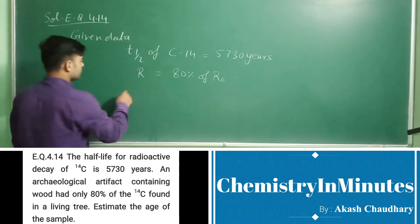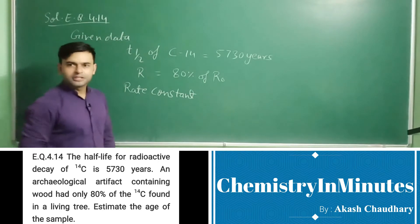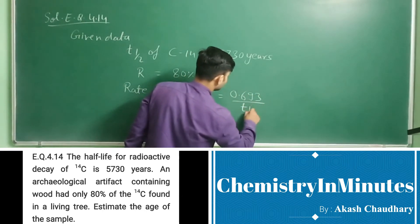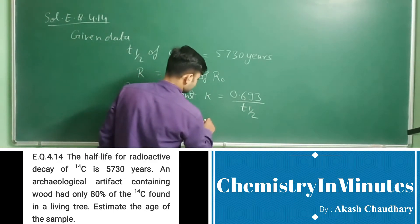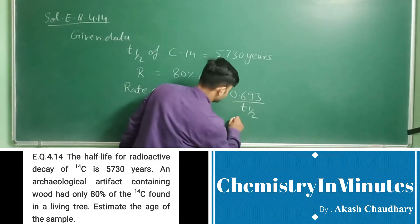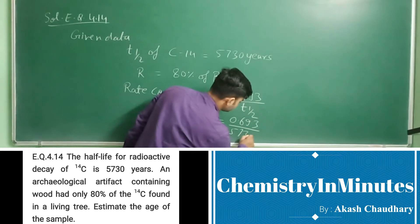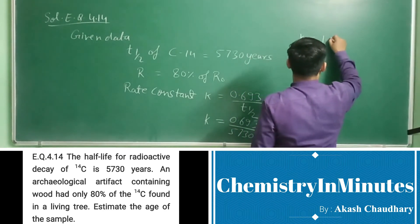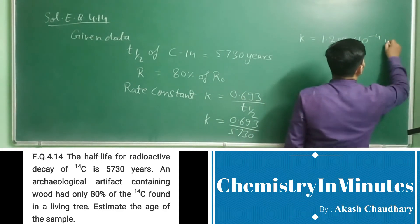So first we will calculate the rate constant. Rate constant K is equal to 0.693 upon T half. Now the values: K equal to 0.693 divided by 5730. So from here the K will come as 1.209 into 10 raised to the power minus 4 per year.